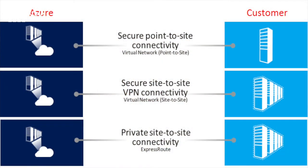The VNet is in place, our NSGs are okay, and we have the first workload running in Azure. It's time to make a hybrid connection. We have two flavors to connect our Azure network to our on-premise network: one is via VPN and the other is via ExpressRoute. With VPN, we have two types of connection: a point-to-site connection, where we connect a laptop or computer directly to the Azure virtual network, or a site-to-site connection, where we connect our complete on-premise network to our Azure VNet.